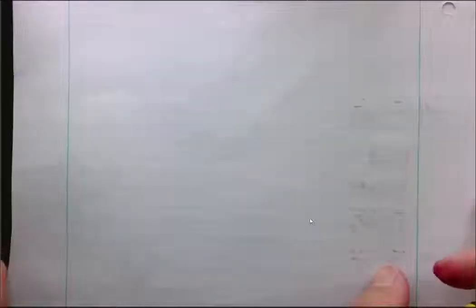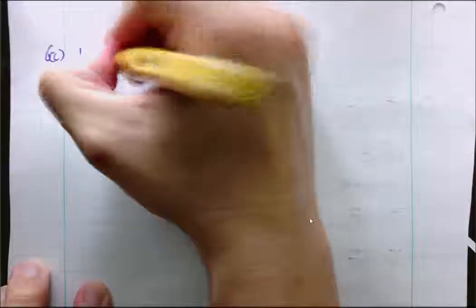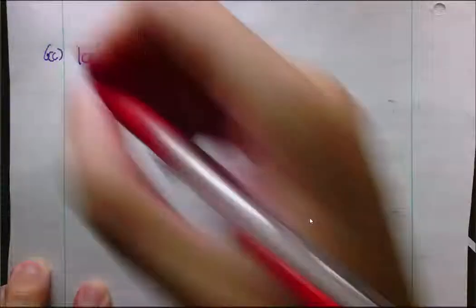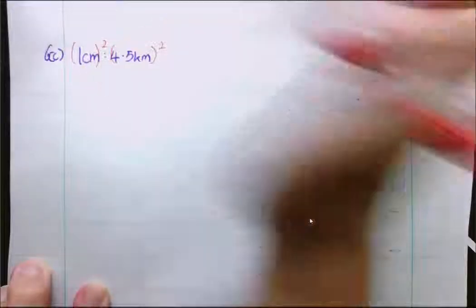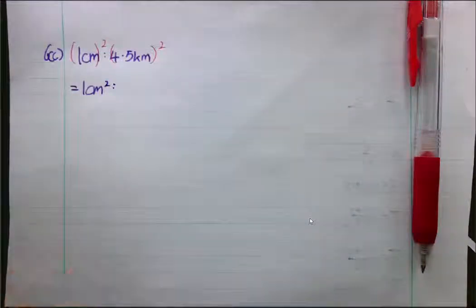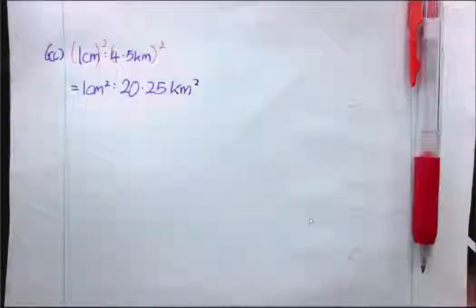Now, we move on to 6c. 6c works like this. The area of a lake on the map is 0.6. Find the actual area. So, I have 1cm represents 4.5km. Now, in order for us to get the area scale, we square both sides. So, what I'll get is 1cm² representing 20.25km². Yes.